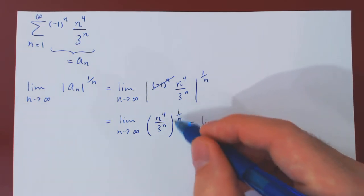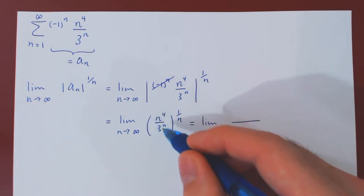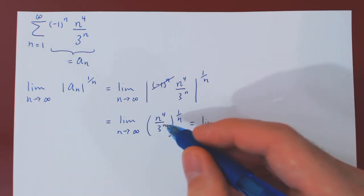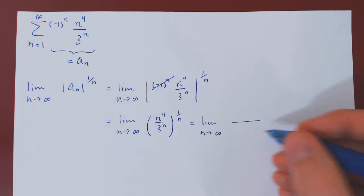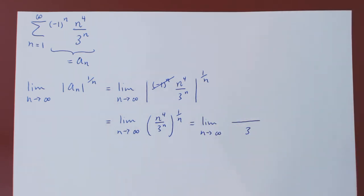We can now distribute the power of 1 over n to both the numerator and the denominator. Well, the simplest one is the 3 to the n raised to the 1 over nth power. n times 1 over n is 1, and so we are left with 3 on the denominator.